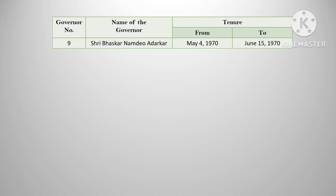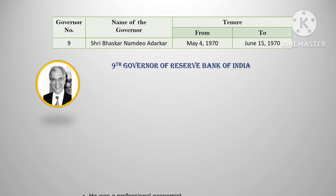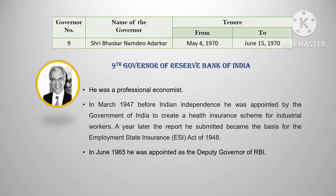The ninth governor was Sri Bhaskar Namdev Ardharkar. His tenure was from May 4, 1970 to June 15, 1970. He was a professional economist. In March 1947, before independence, he was appointed by the Government of India to create a health insurance scheme for industrial workers. The report he submitted became the basis for the Employees' State Insurance (ESIC). In June 1965, he was appointed as deputy governor of RBI before becoming governor.